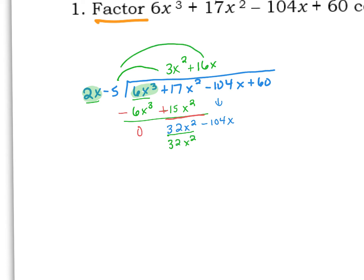If I multiply 16x times 2x, I do get 32x squared. Keep in mind I also have to multiply that 16x times that negative 5, and that gives me minus 80x. At this step, I'm going to switch my signs — take the opposite of each — and add down the like terms. I should get 0, and I do. But here I end up with a negative 24x.